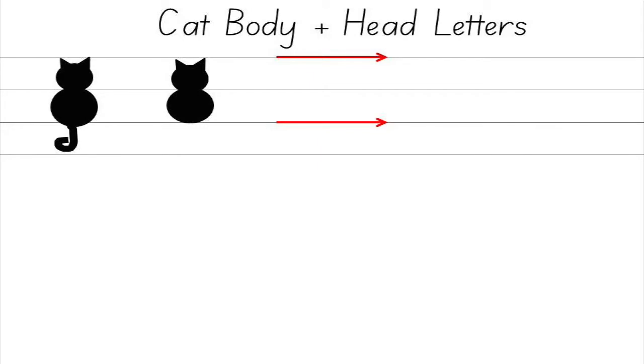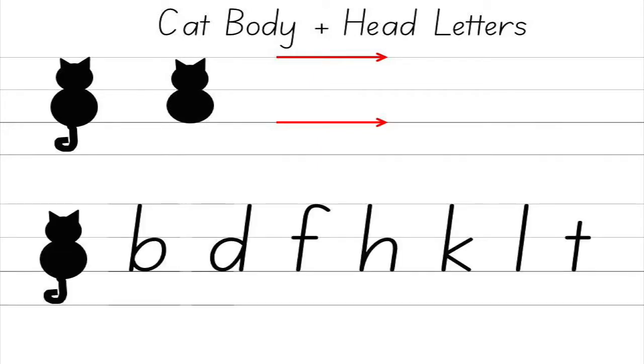Cat body and head letters are the taller letters that come right up to the top line: B, D, F, H, K, L, and T.